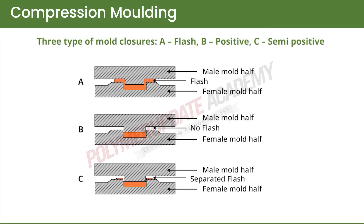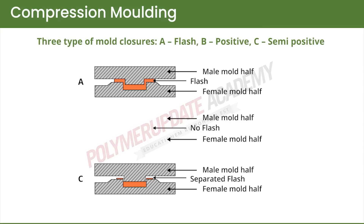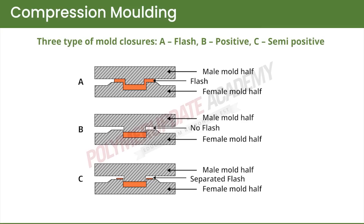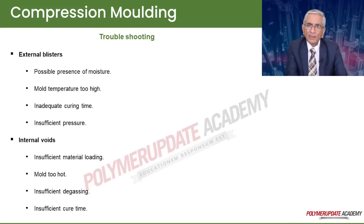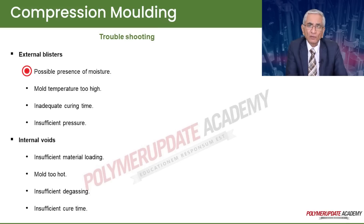The flash type is the easiest to operate, the positive type is more difficult, and the semi-positive type is in between. A typical compression molding machine on an industrial scale is shown here. Regarding troubleshooting, external blisters may be caused by the presence of moisture, mold temperature being too high, inadequate curing time, or insufficient pressure.